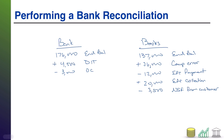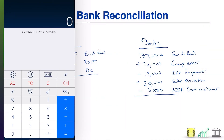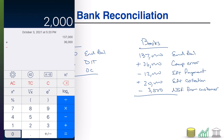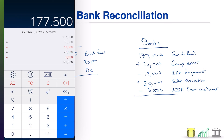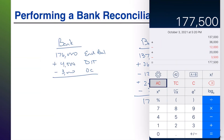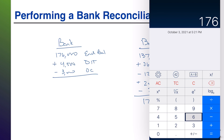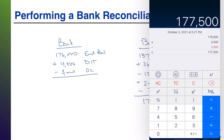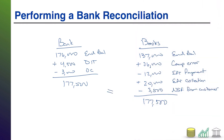We've now done everything. Let's do the math. On the book side: $137,000 plus $36,000 minus $12,000 plus $20,000 minus $3,500 puts our book balance at $177,500. On the bank side: $176,000 plus $4,500 minus $3,000 puts that at $177,500. Our two balances are equal, and we can report that $177,500 as the amount of cash on our October 31 balance sheet.